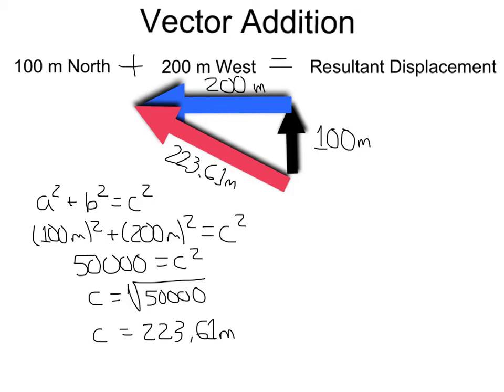223.61 meters for our magnitude. Now let's find our direction, which is this angle right here. We'll have to do, we can do sine, cosine, or tangent. Maybe we'll do tangent right now to do that. So we'll take tangent of the angle, let's call that angle theta right here. So tangent of theta is going to be the opposite side over the adjacent side.